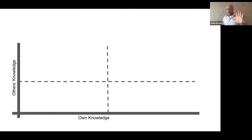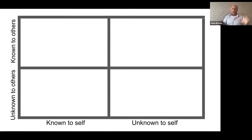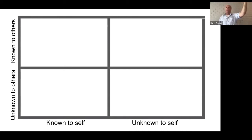If an engineer is looking at this, they would just know that the intersection of the two graphs is zero — so others' knowledge starts with know nothing and moves towards know something, and own knowledge does the same. But these guys were psychologists. Instead, they created this idea of two axes making four windows: something known to self and unknown to others; known to both others and self; known to others but not to us; and something known by nobody — not us and not others.